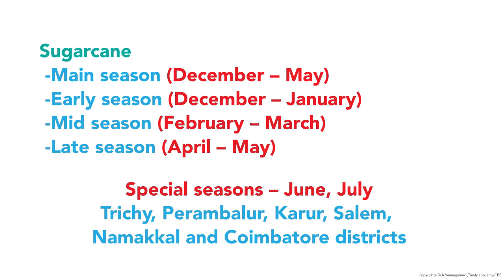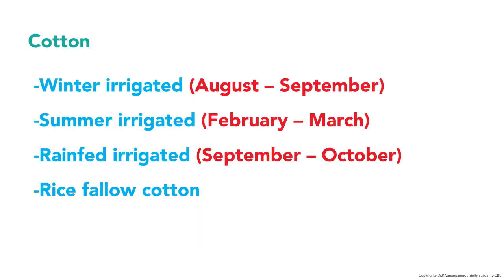For sugarcane across Tamil Nadu, the main season is December–May. There are three seasons: early season (December–January), mid season (February–March), and late season (April–May), plus a special season in June–July. This is followed in districts like Trichy, Perambalur, Karur, Salem, Namakkal, and Coimbatore. For cotton, the seasons are: winter irrigated (August–September), summer irrigated (February–March), rainfed (September–October), and rice fallow cotton.